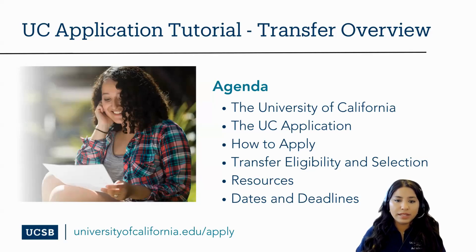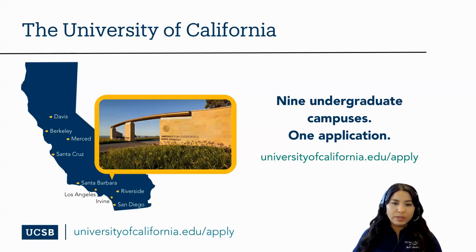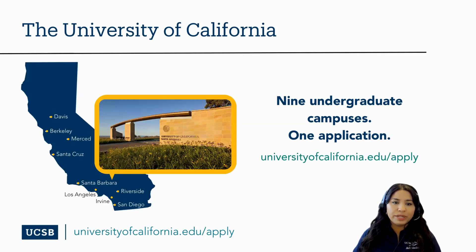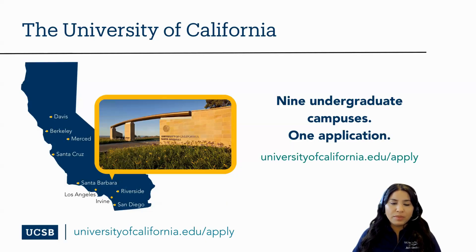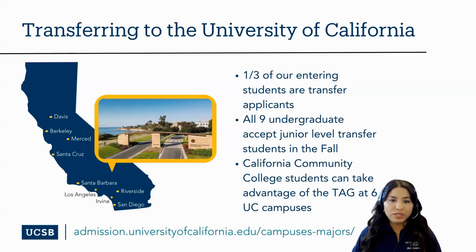The University of California is comprised of ten incredible campuses, with nine of the campuses being primarily undergraduate-focused universities. The UC's undergraduate campuses are located throughout the state of California, with each campus offering its own uniqueness. With nine undergraduate campus options, we are confident that you'll find more than one campus that fits your interests and needs. One-third of our entering students each year are transfers, and most come from California Community Colleges.